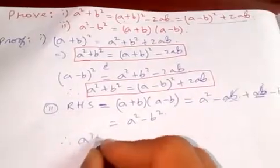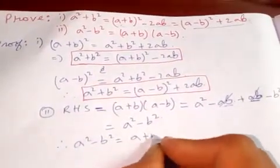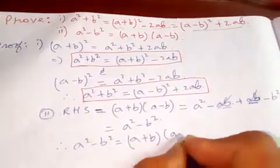So I can say a² - b² is equal to (a+b)(a-b).